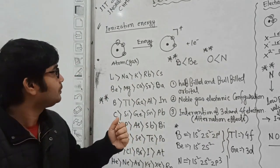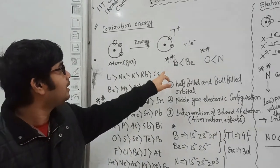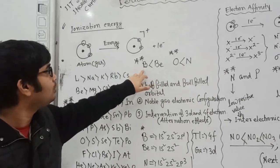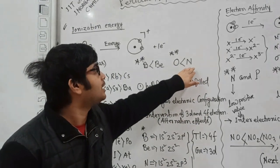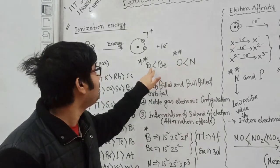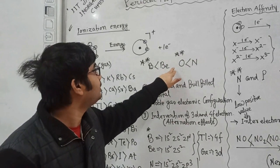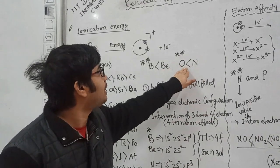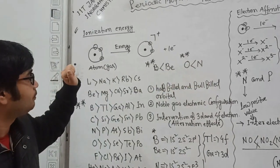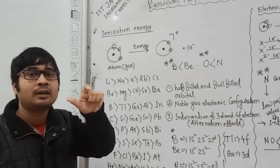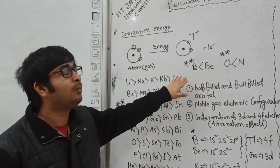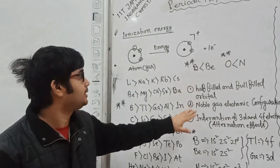But there are a few exceptions. For example, beryllium has higher ionization energy than boron, and nitrogen has higher ionization energy than oxygen, although boron comes after beryllium and oxygen comes after nitrogen. Why does this anomaly happen? There are a few factors on which ionization energy anomaly depends.